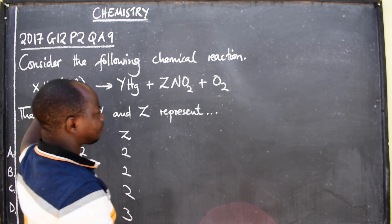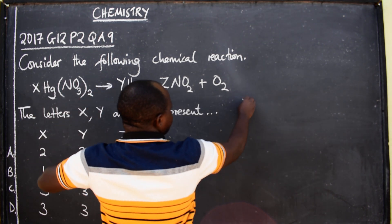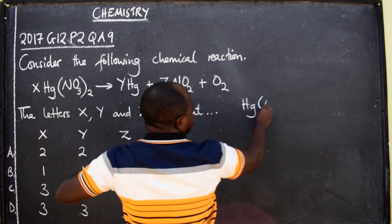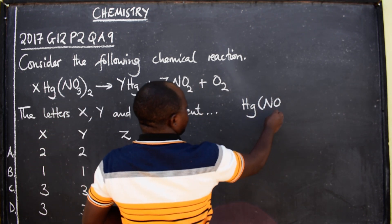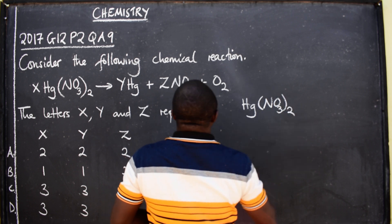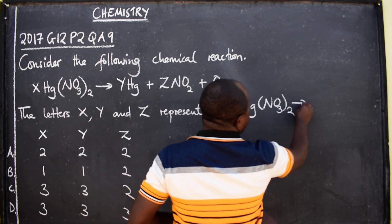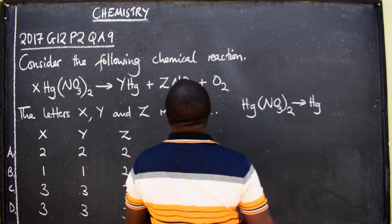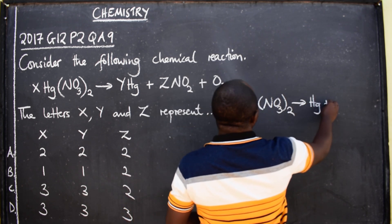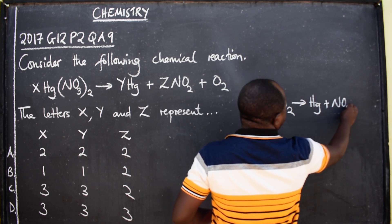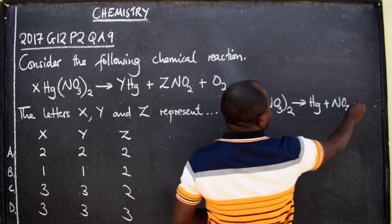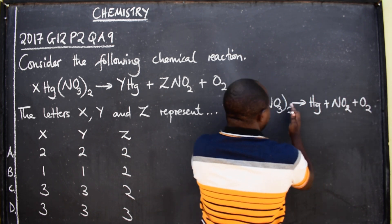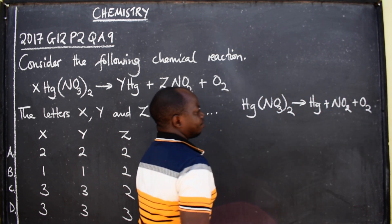We have Hg(NO₃)₂ being decomposed to Hg plus NO₂ plus oxygen gas. So we have got two sides: the left-hand side and the right-hand side.